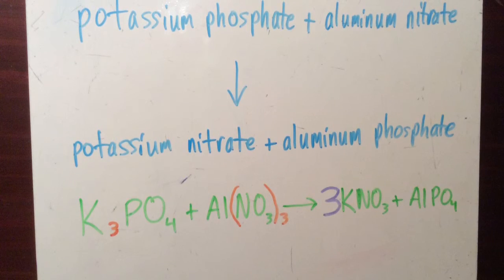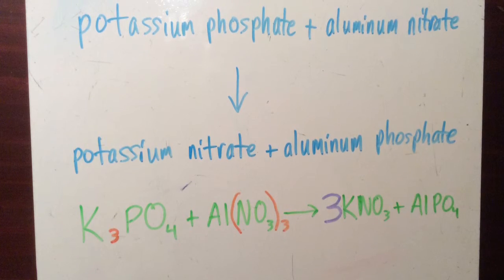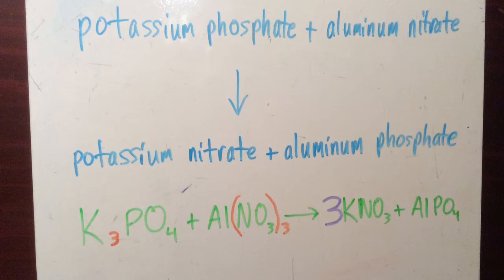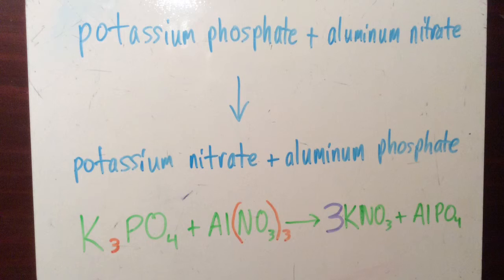This is the only coefficient we will have to add because it takes care of the potassium and nitrate differences in atoms. This is the final balanced formula for this chemical equation.